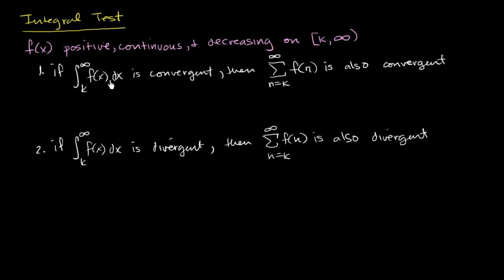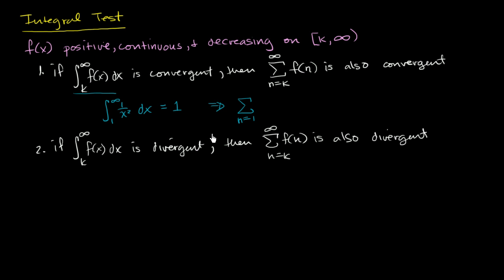In the last video, we already saw this in the case of f of x equals one over x squared. We saw that since the integral from one to infinity of one over x squared dx is convergent — in fact it equals one — because of that, we were able to say that the sum from n equals one to infinity of one over n squared is also convergent.